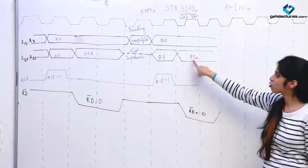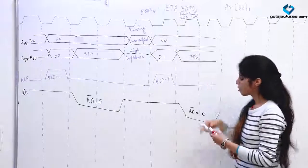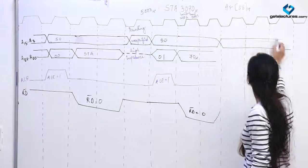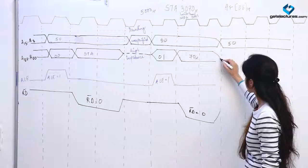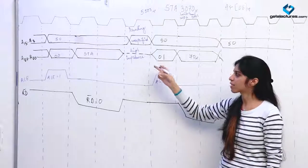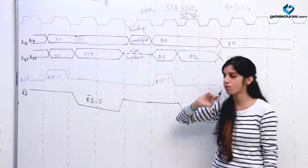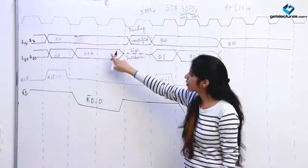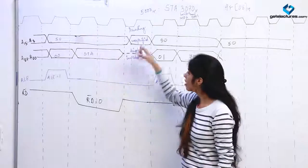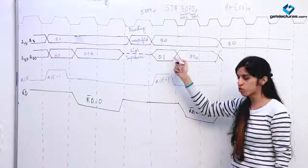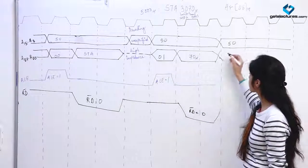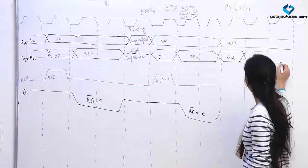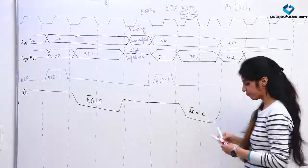Now we have got the LSB of the address. We now require 30. Again, PC gets incremented after every instruction completion. Initially the value of PC was 5000, so 5000 was loaded on the address bus. After we read the opcode STA, PC got incremented and 5001 was placed on the address bus. Now that we have got the least significant byte, PC increments again and we get 5002 on the address bus. Stored at 5002 is 30.